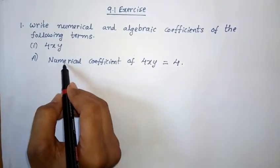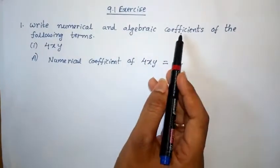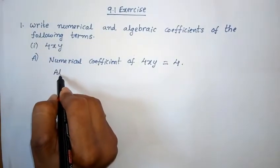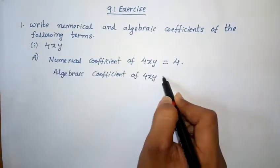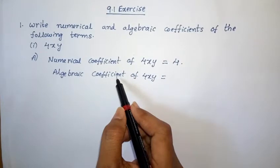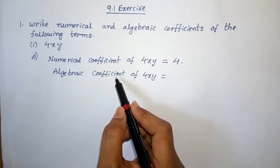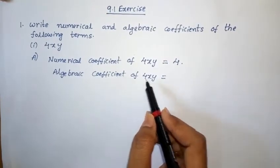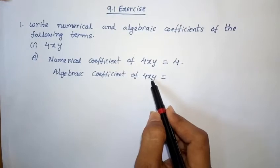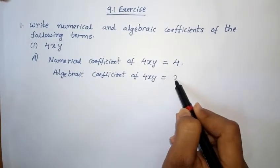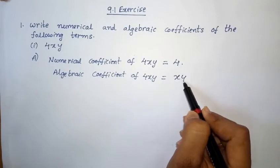Next, find algebraic coefficient. Algebraic coefficient — it is the symbols and letters. So in this 4xy term, the letters are x and y, so algebraic coefficient is xy only.